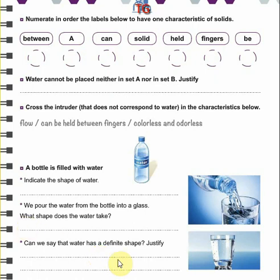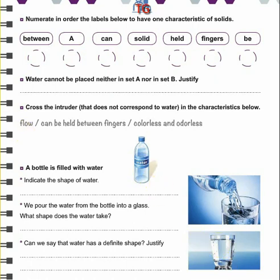Water doesn't have a definite shape. For example, if we put a pencil or eraser in a bottle or bowl or glass, it keeps the same shape — that's why we say solids have a definite shape. Thanks for listening. Stay safe and take care. Please solve this and send me your answers, and copy the answers of all the questions I've solved in this video.